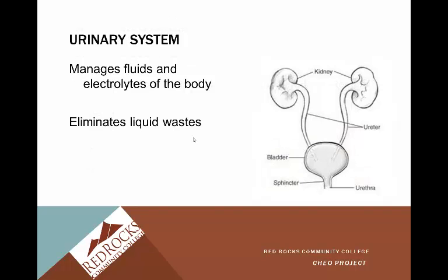The urinary system manages fluids and electrolytes in the body, which is so important, and then eliminates liquid waste — another way that we eliminate waste from the body. The schematic here shows basically the kidneys, the ureters, the bladder, and the urethra. We'll talk about this in more detail as well.